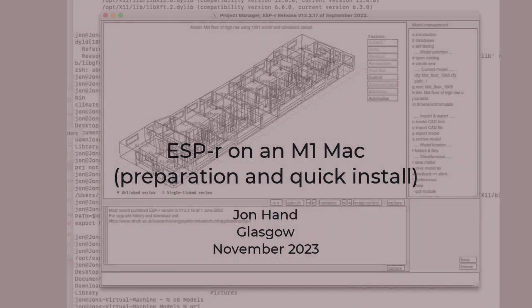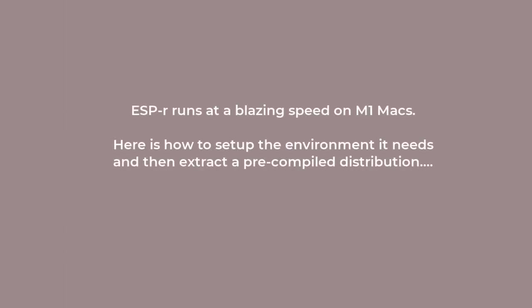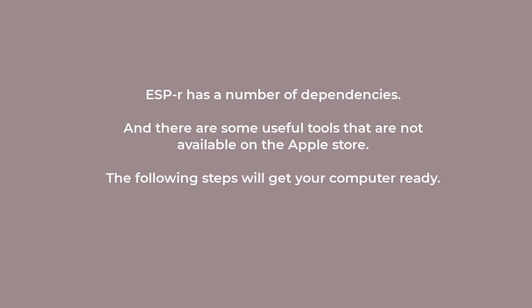In this video, we're going to look at getting ESPR running on an M1 Mac. We're going to do the preparation and then use a pre-compiled version of ESPR rather than having to compile from scratch. We're going to assume that you've got some OSX command-line window experience and are able to issue commands into it. ESPR has some dependencies and there are also some useful tools that are not available on the Apple application store, so we're going to set up an environment to get those things onto your computer.